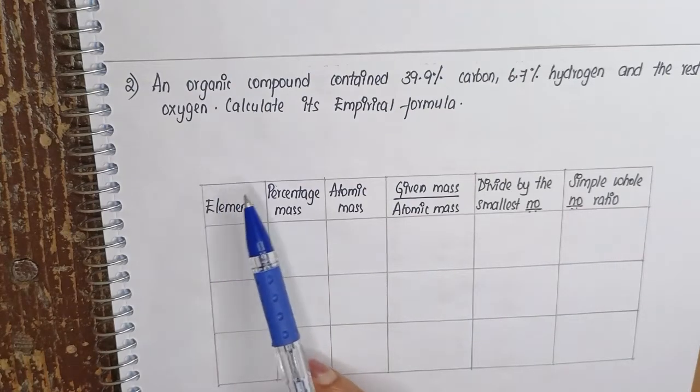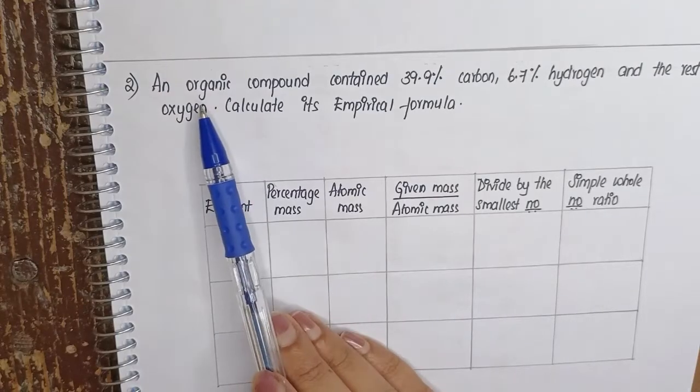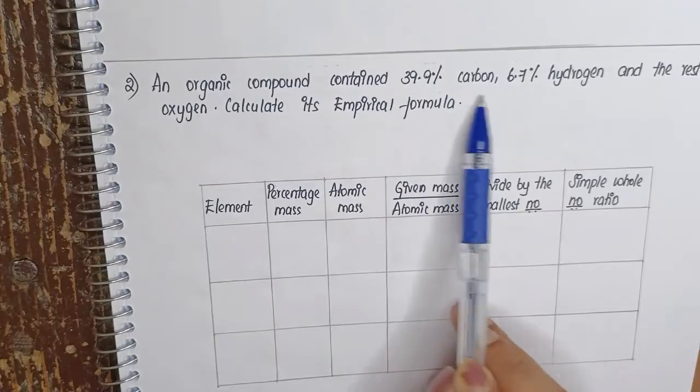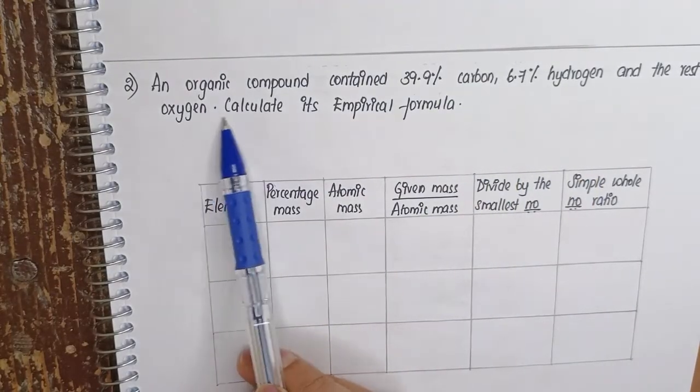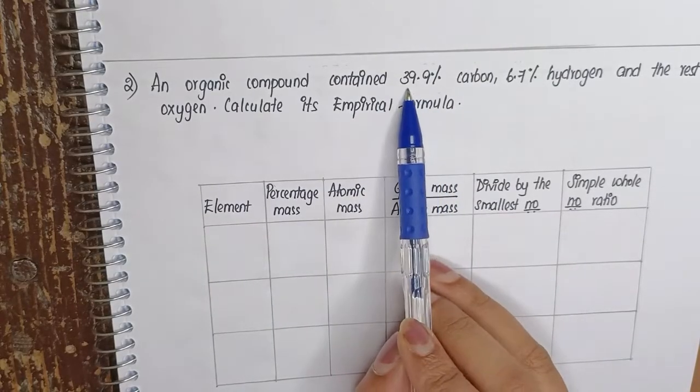In this video, we are going to solve another empirical molecular formula. The question is: an organic compound contained 39.9 percent carbon, 6.7 percent hydrogen, and the rest is oxygen. Calculate its empirical formula.